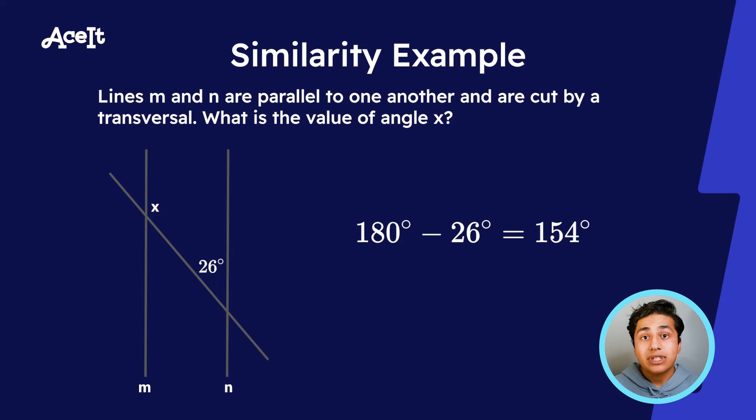Since transversals create two sets of vertical angles, that means you're going to have to subtract that 26 from 180 degrees in order to find the angle B. So this means angle X is going to be 154 degrees.